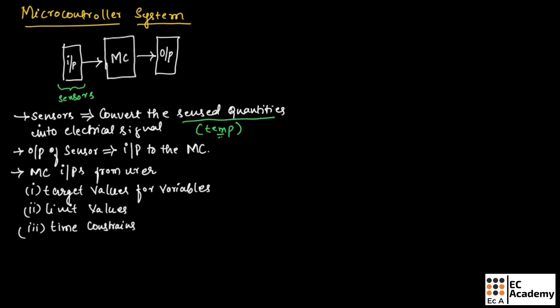If we say target values, an example is desired room temperature. We can set the desired room temperature, and that will be the target value given as input to the microcontroller.